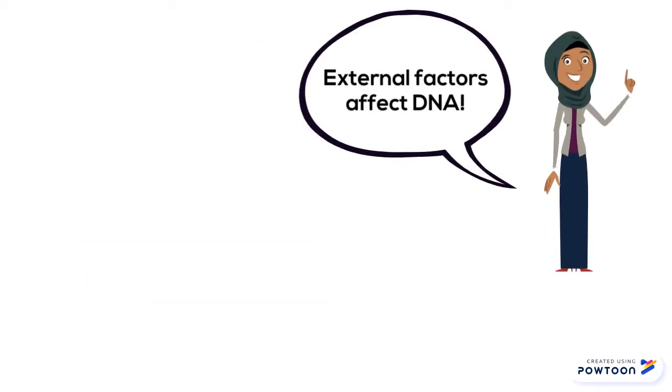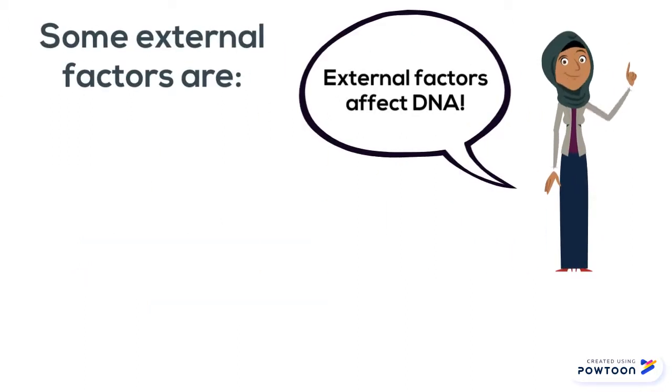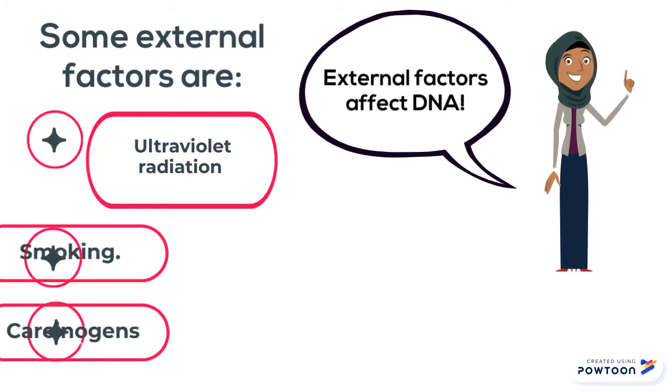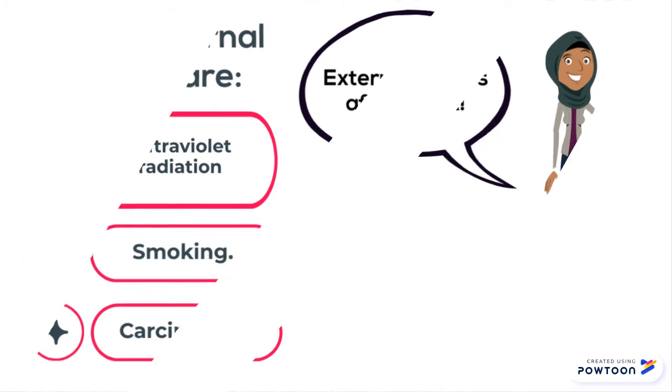Environmental mutagens and toxins can also affect the proper functioning of the DNA, such as UV radiation from the sun, smoking, and other environmental carcinogens.